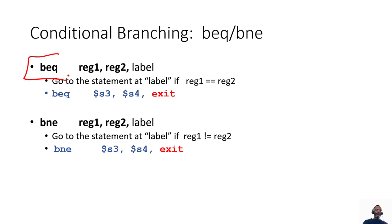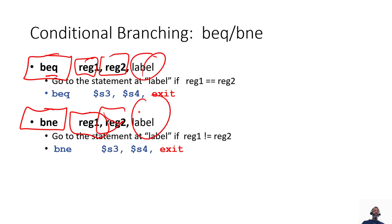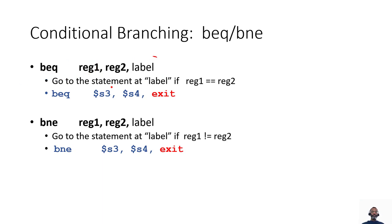BEQ stands for branch if equals. BNE stands for branch if not equal. The two things that we're testing for equality are registers, and if the values in those two registers are equal, or if they're not equal, then we're going to jump to a particular label, a particular location in code and memory. An example of that is shown here. BEQ if registers S3 and S4 are equal, we're going to go to the exit.